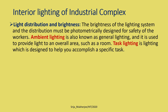Two important terms to know are ambient lighting and task lighting. Ambient lighting, also known as general lighting, is used to provide light to an overall area such as a room. Task lighting is lighting designed to help you accomplish a specific task — for example, a table lamp at a study table helps you with reading. The table lamp provides task lighting for a specific task, while ambient lighting provides general illumination for the room.